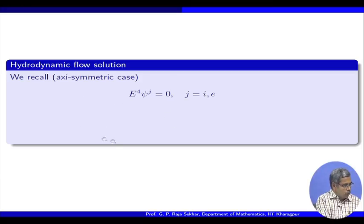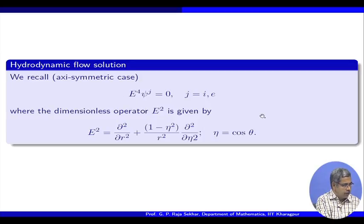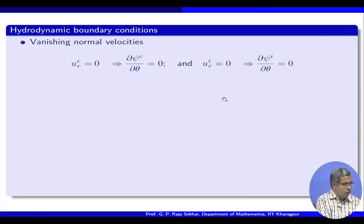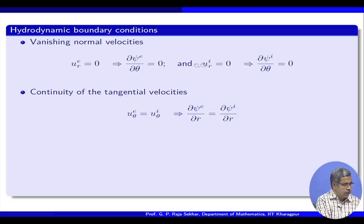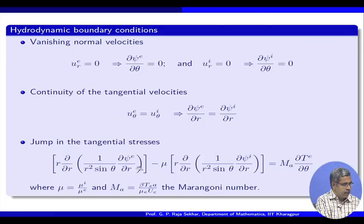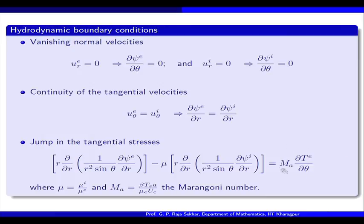Since we have axisymmetry, we have the corresponding stream function. The boundary conditions are pretty much straightforward. The notable one is the jump in the tangential stresses, which is due to the surface gradient of the surface tension.